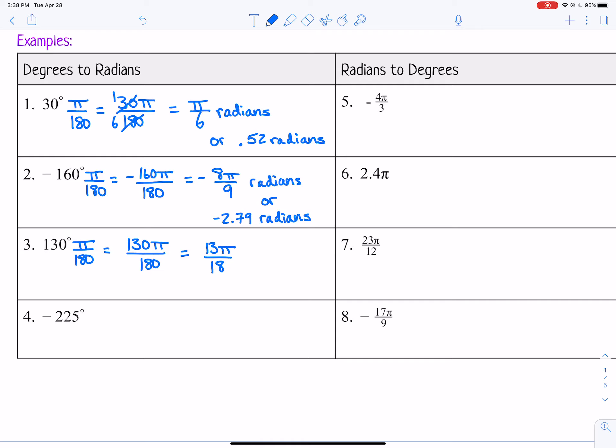But again, 13 pi over 18 is a more exact answer, so that would be best. I'm just using the pi button in my calculator. 13 pi divided by 18 would be 2.27 radians if we needed to round it.